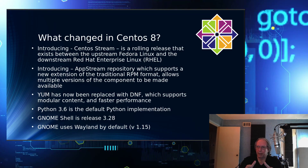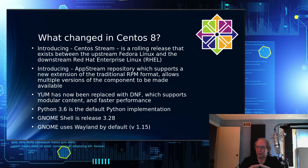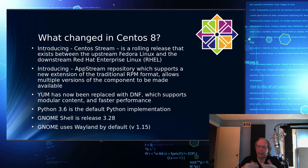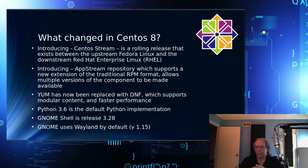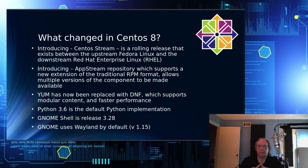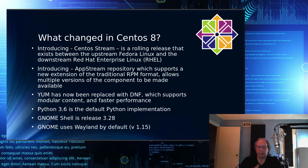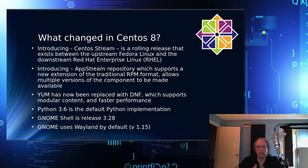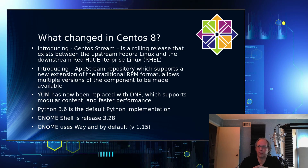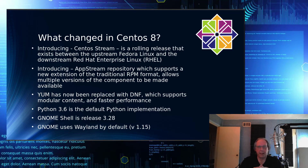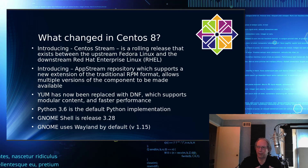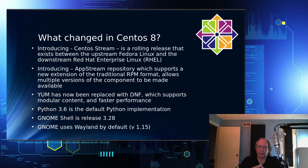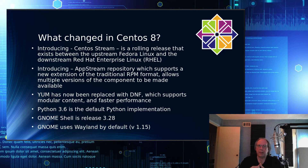Also in CentOS 8, they have added the AppStream repository, which can be found in Red Hat 8 as well. That is an extension of the traditional RPM format, and it allows multiple versions of components to be made available. By default, the new one is installed, but you can choose different versions if you so desire. Yum has been replaced by DNF because of AppStream — it allows for modularization and also faster performance.